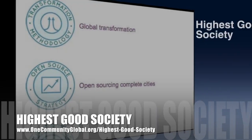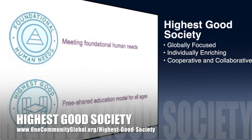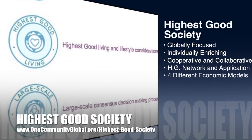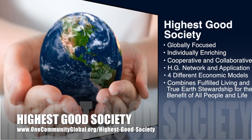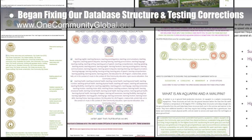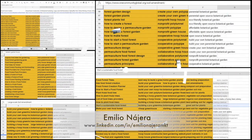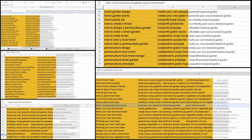One Community's approach to Highest Good Society is globally focused, individually enriching, cooperative and collaborative, includes a highest good network and application, four different economic models, and combines fulfilled living and true earth stewardship for the benefit of all people and all life on this planet. This week the core team began the process of fixing our database structure and testing our corrections. Emilio Nojera, digital marketer, also continued with his ninth week as part of the marketing team, researching keywords for three more top-level food-related pages: open source botanical gardens, large-scale soil amendment, and the apiary bee yard.